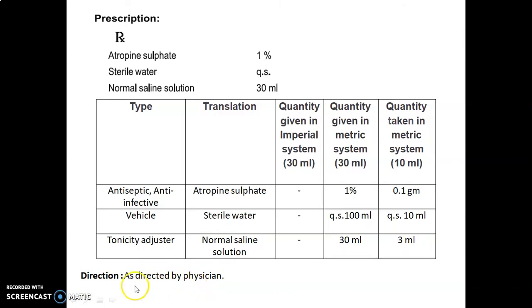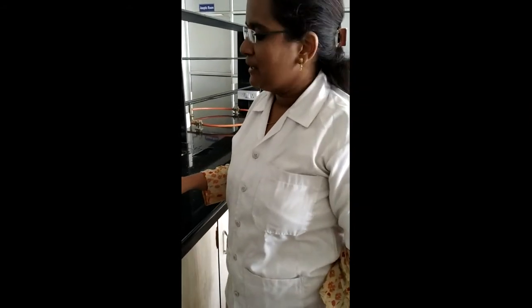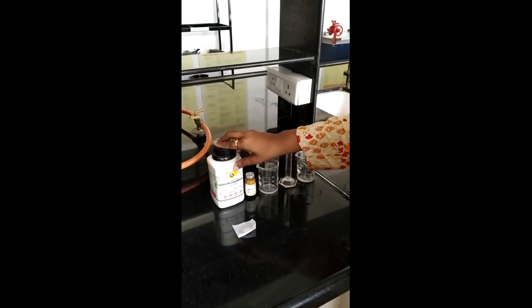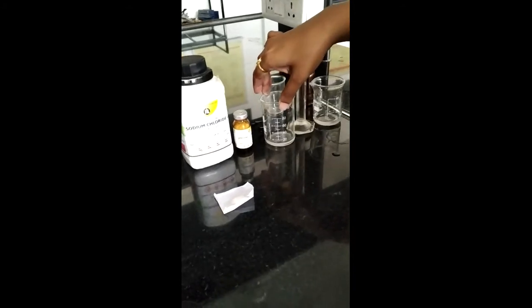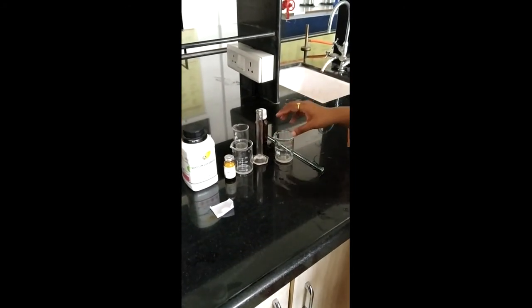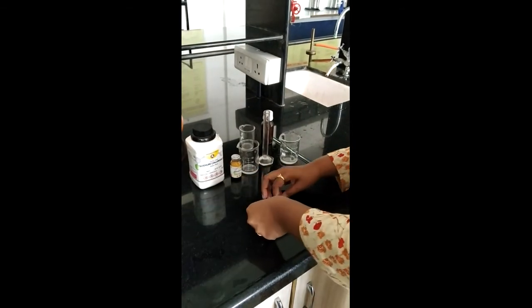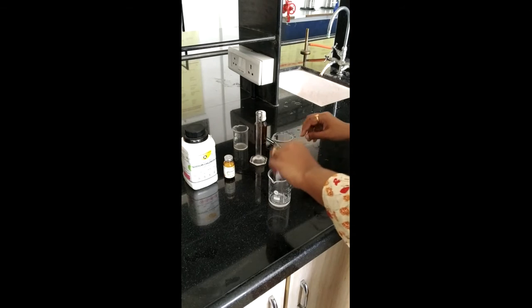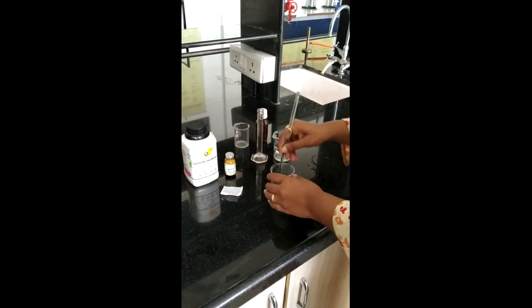For performing the actual experiment, let's move towards the laboratory. We have sodium chloride from which we have already prepared normal saline solution, atropine sulfate which is the API in this experiment, and sterile water. First of all, we are going to add the previously weighed atropine sulfate into the normal saline solution which was previously prepared from sodium chloride, then after properly stirring it, we are going to add sterile water into it and then properly mix it.